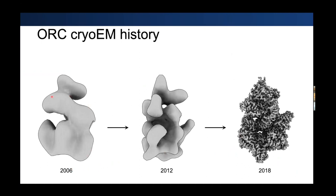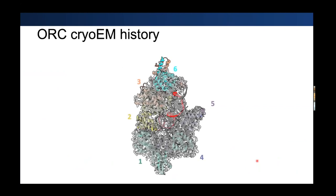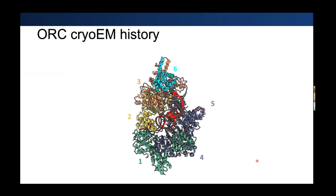In 2015, the first atomic resolution structure of ORC was determined. Since then, there have been emerging ORC structures. The first was solved by X-ray crystallography, but since then the more popular technique has been cryo-EM, likely because of how dynamic the complex is. The improvement in cryo-EM with ORC has run parallel with the resolution revolution in cryo-EM itself — from blobology in early maps to really high-quality maps where you can model subunits down to residues and side chains.